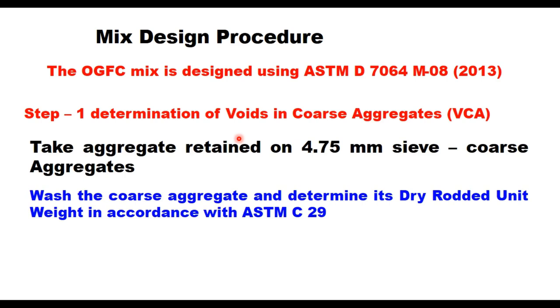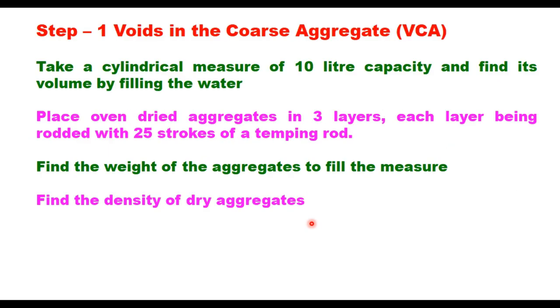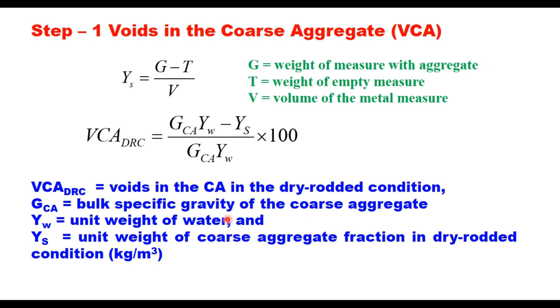The OGFC mix is designed using ASTM D7064, and this procedure will be explained in 8 steps. Step 1 is to determine the voids in coarse aggregate, VCA. Take the aggregate retained on 4.75 mm sieve, wash it, and determine its dry-rodded unit weight in accordance with ASTM C29. Take a cylindrical measure of 10-liter capacity, fill with oven-dried aggregate in three layers, each compacted with 25 strokes of a tamping rod. Find the weight of aggregates to fill the measure, then calculate the density.